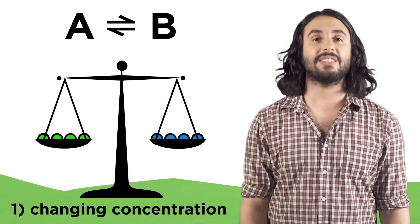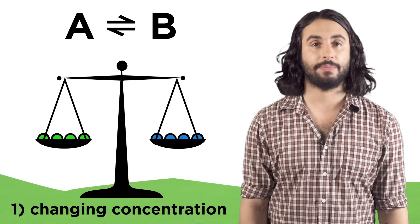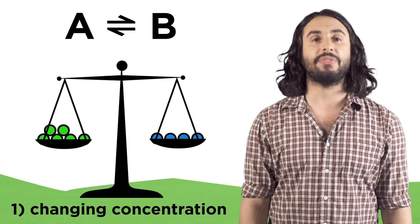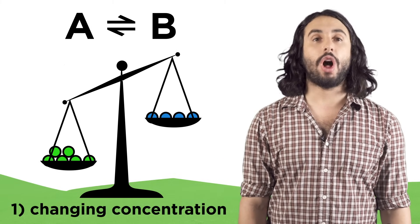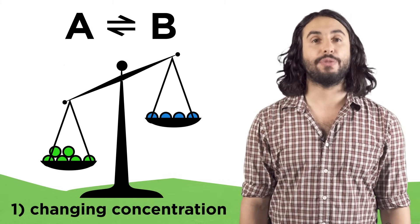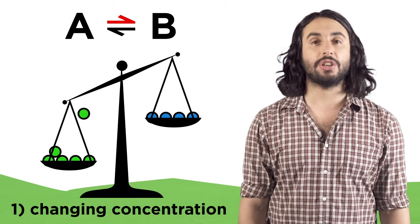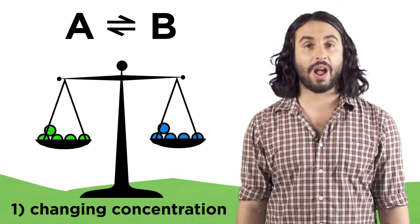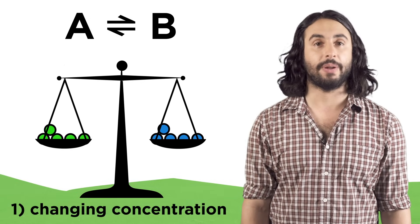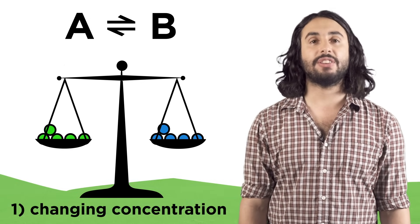First, we could modify the concentration of any of the compounds. Let's say we add some of this reactant. That will unbalance the equilibrium and the forward reaction will speed up to use up some of the additional reactants, turn them into products, and restore equilibrium.